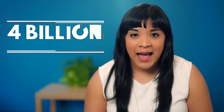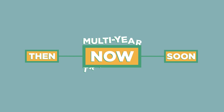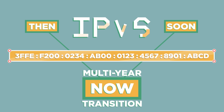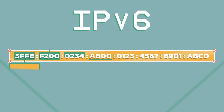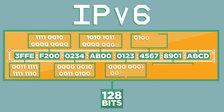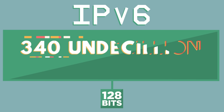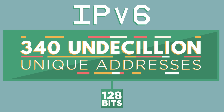But the internet has turned out to be much more popular than even Vint Cerf imagined, and 4 billion unique addresses won't be enough. We're now in the middle of a multi-year transition to a longer IP address format called IPv6, which uses 128 bits per address and provides over 340 undecillion unique addresses. That's more than enough for every grain of sand on Earth to have its own IP address.